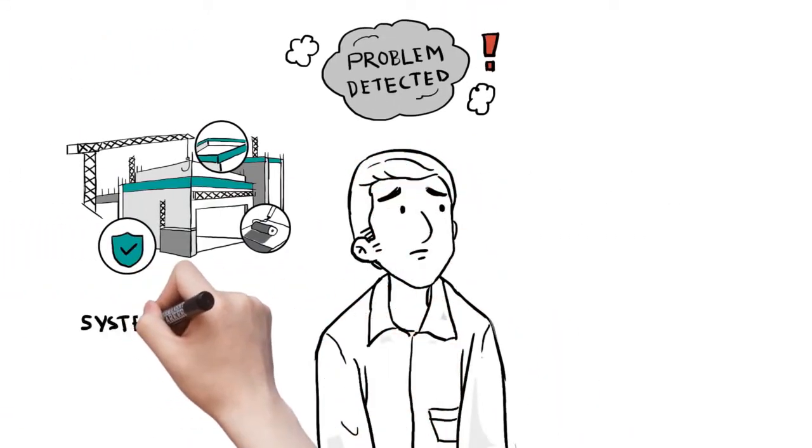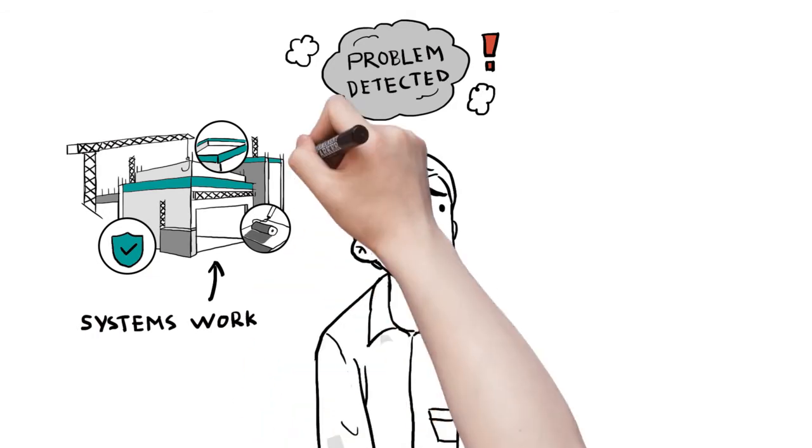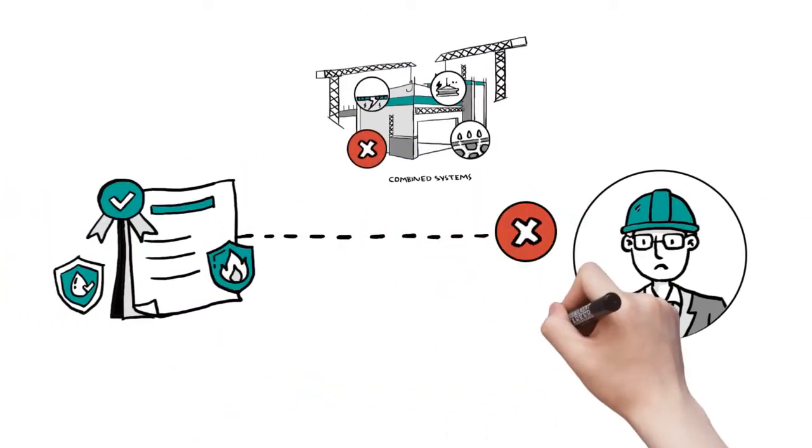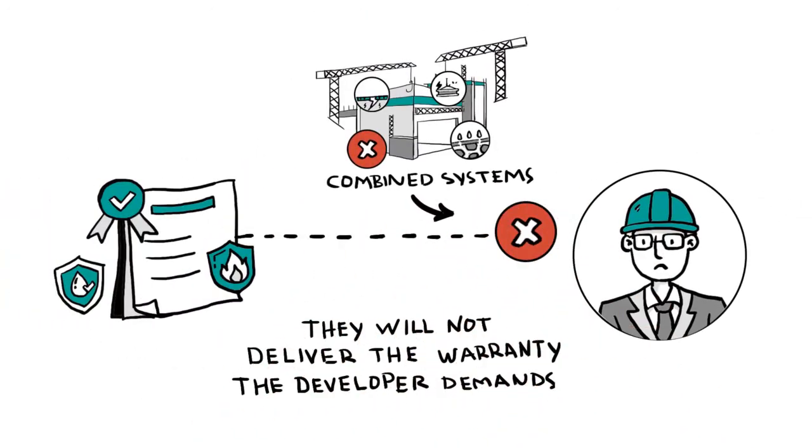His problem is, some systems give him the performance he requires by themselves, but when combined with another system creates weak points in the building, plus when combined they will not deliver the warranty the developer demands.